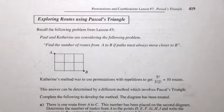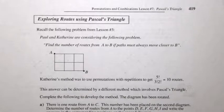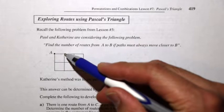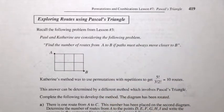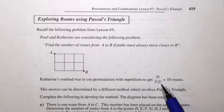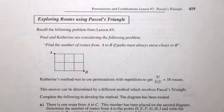Let's consider this problem. Paul and Catherine are considering the following problem: find the number of routes from A to B if paths must always move closer to B. So that means if you're here, you either have to go down or to the right. Catherine's method was to use permutations with repetitions to get 5 factorial over 3 factorial times 2 factorial in the denominator, which equals 10.